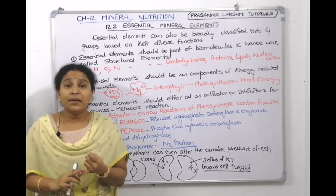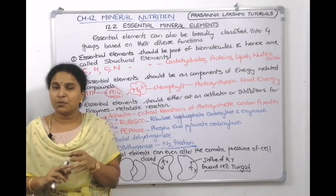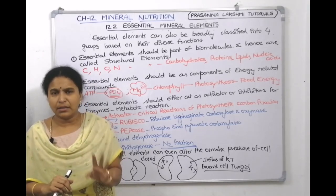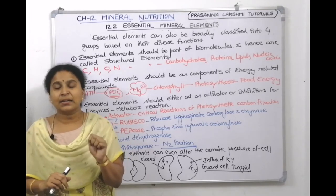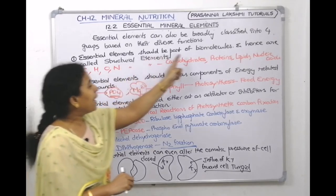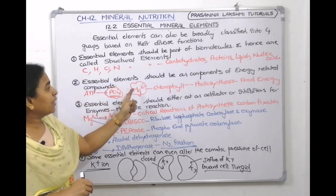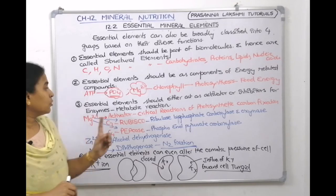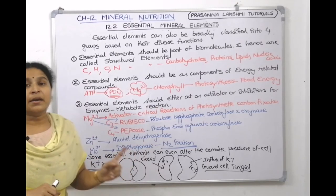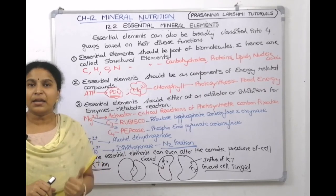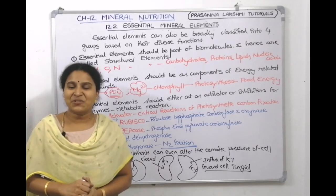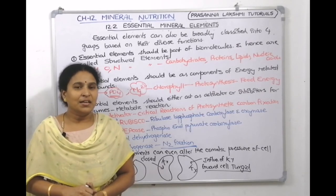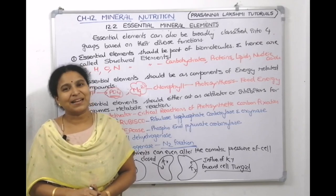To summarize today's class: we covered the historical account of mineral nutrition, the criteria of essentiality proposed by Arnon and Stout, and also a broad classification of essential minerals into four categories based on their functions — part of a biomolecule, part of an energy-related compound, activator or inhibitor for enzymes, and altering osmotic pressure, with K+ as an excellent example. In the next lecture we will talk about macronutrients, their roles and functions. If you like the content, please like, share, and subscribe.